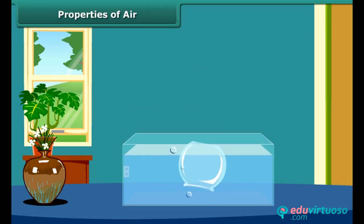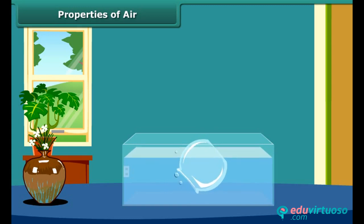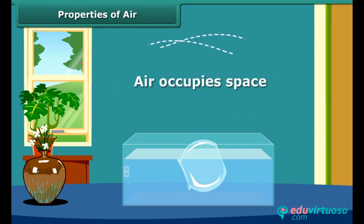Now tilt the pitcher slightly. The air bubbles are coming out of the pitcher and water starts entering into it. So you can see that the pitcher is not empty. Air that was present in the pitcher is coming out. This shows that air occupies space.